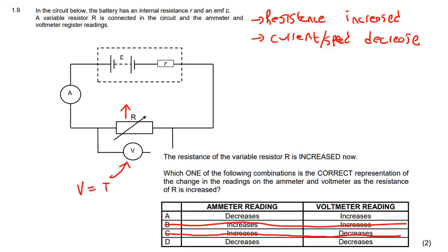So now they want us to look at this voltmeter reading. Now we know that voltage is equal to current multiplied by resistance. But now this is going to be very difficult to do, because we know that this current is going to decrease, the current that is flowing through here.